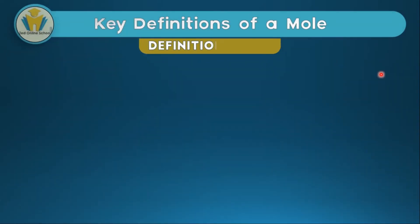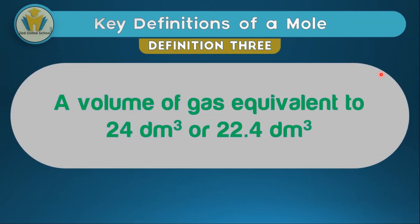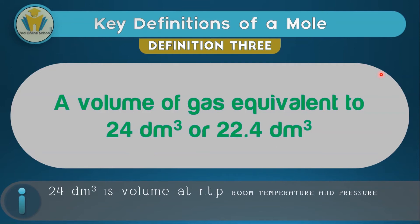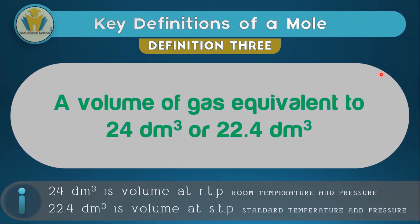The third definition is also very interesting and important. In this third definition, we are talking about a mole only related to gases. So if we get a volume of gas equivalent to 24 cubic decimeters or 22.4 cubic decimeters, we have collected a mole of that gas. You should note that 24 cubic decimeters is the volume of gases at room temperature and pressure, while 22.4 cubic decimeters is the volume of gases at standard temperature and pressure. Later in this video, you'll know the values for room temperature and pressure and standard temperature and pressure.